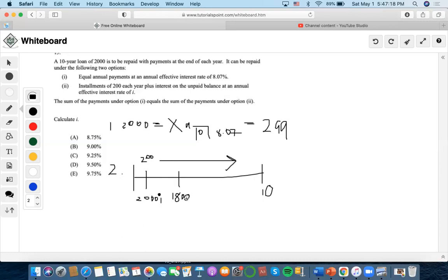Once we do that, we also have to pay an effective interest rate of i on top of that as well. Then once we pay out $200 at time two, this decreases to $1,600. And on top of that, we would also have to pay an interest rate of i. So now this continues on. Now it says that the sum of payments under option 1 equals the sum of payments under option 2.